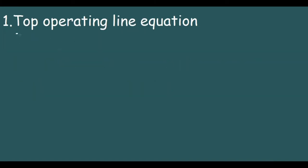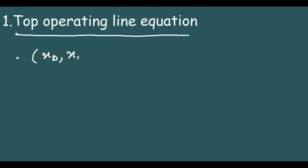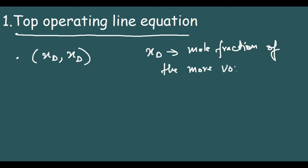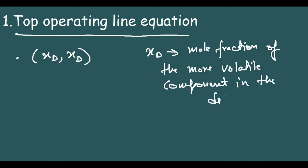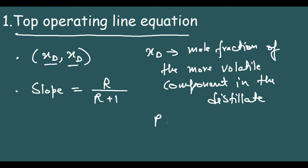Now we will discuss the top operating line equation. This is a linear equation. The top operating line passes through the point (XD, XD), where XD is the mole fraction of the more volatile component in the distillate. The slope of this operating line is equal to R by R plus 1, where R is the reflux ratio.